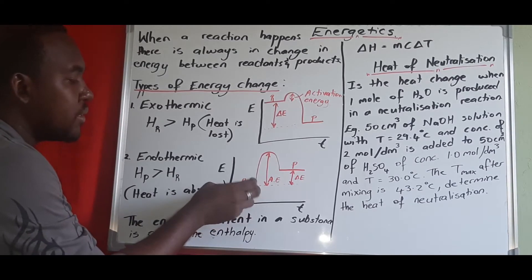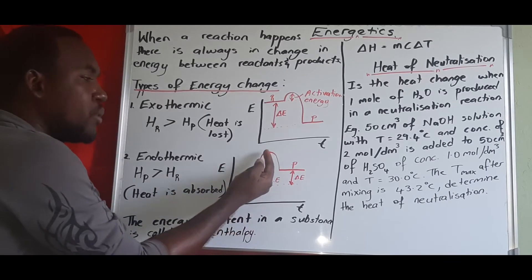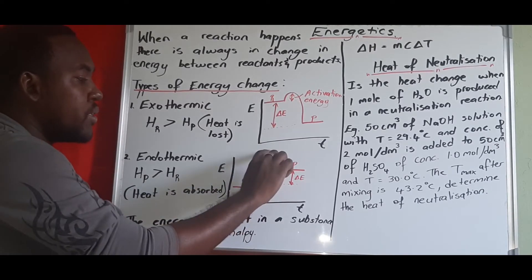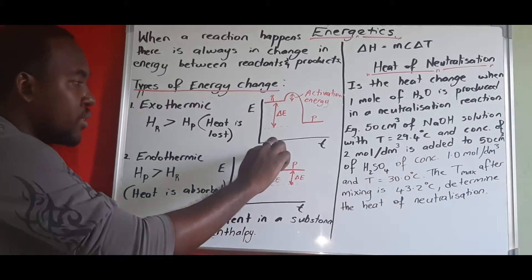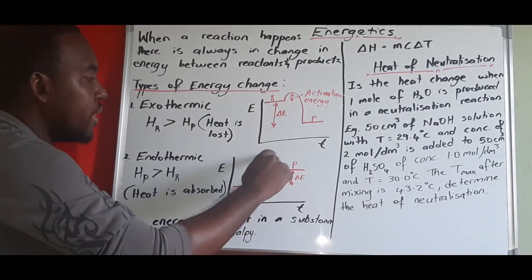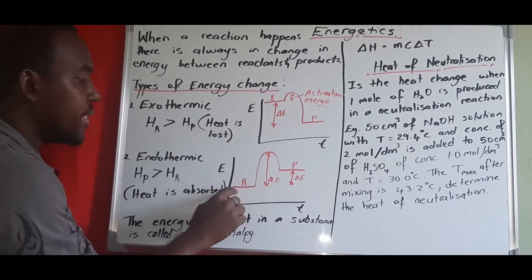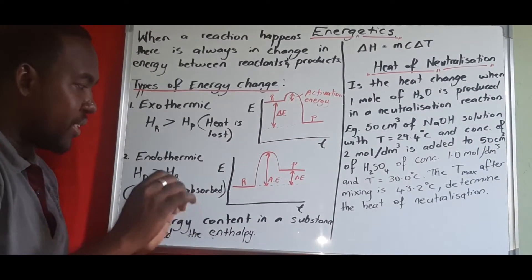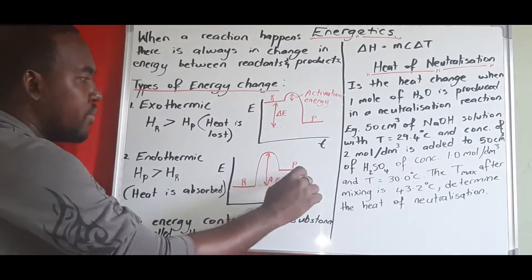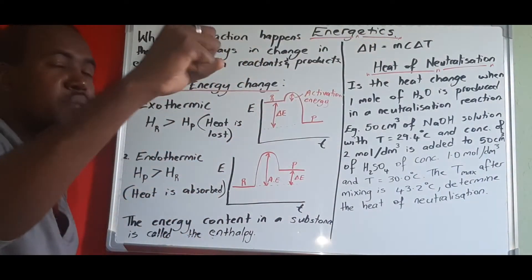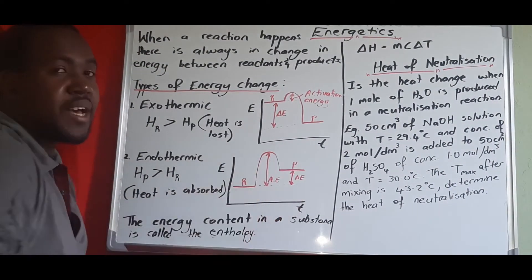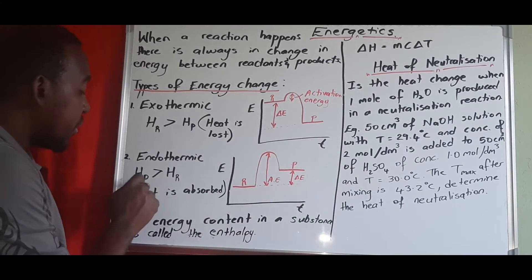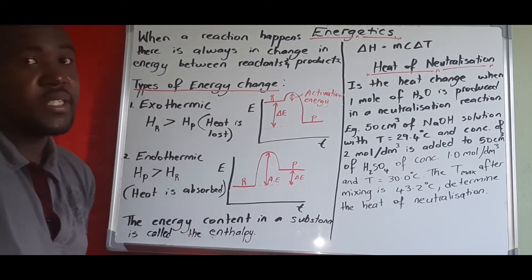The next type is the endothermic reaction. Here the reactants have lower energy, and the energy still has to peak to a maximum — that distance from the reactants to the maximum peak is the activation energy. Once the reaction starts, the products end up with more energy than the reactants. Because the products have more energy, energy is drawn from the surroundings into the reaction. So in an endothermic reaction, the product energy is greater than the reactant energy, and energy is absorbed.